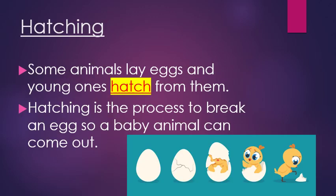Let's discuss about hatching. Some animals lay eggs and young ones hatch from them. Hatching is a process of breaking an egg so that a baby animal can come out. Here I have given a picture in which you can see that from an egg a baby chick is coming out. This process is called hatching.